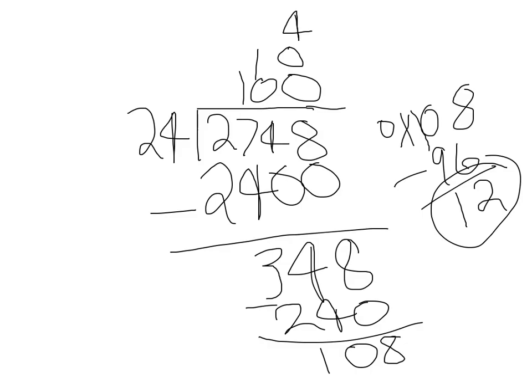To figure out our answer, we just add all of these numbers together. 100 plus 10 is 110. Plus 4 is 114. And now we put our remainder, which is 12. And there's your answer.